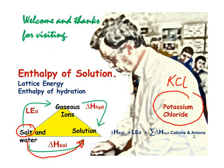We could find the enthalpy of solution by the sum of two alternative steps. We could consider taking solid potassium chloride and supplying enough energy to dissociate the lattice to produce gaseous potassium ions and gaseous chloride ions, and then taking those gaseous potassium and chloride ions, adding them to water to carry out what's called hydration — giving us the enthalpy of hydration of the ions. So the enthalpy of solution of potassium chloride could be found as the sum of two steps: the lattice enthalpy of dissociation, plus the enthalpy of hydration of the potassium ion, plus the enthalpy of hydration of the chloride ion.